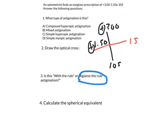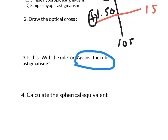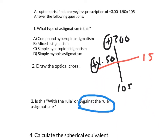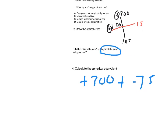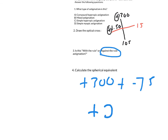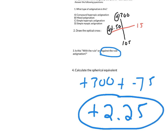Now calculate the spherical equivalent. You can give a prescription without astigmatism that closely represents this prescription, and that's called the spherical equivalent. It's simply plus 3 plus one-half the cylinder. In this case, the cylinder is -1.50, so one-half of 1.50 is 0.75, giving minus 0.75. Adding these together: +3.00 minus 0.75 equals positive 2.25. That's the spherical equivalent — the equivalent spherical prescription without astigmatism.